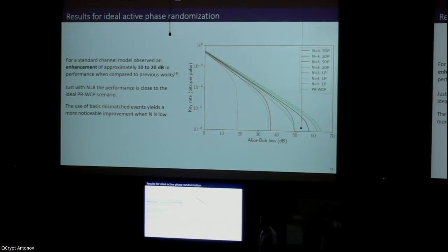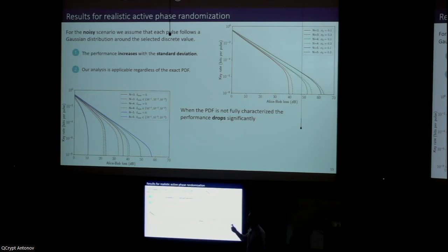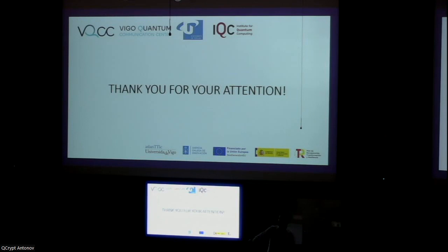Finally, for the realistic case, here we assume a Gaussian distribution for the noisy version, and we see that the performance gets better as the standard deviation increases. This is counterintuitive in some way, but the thing is that a bigger standard deviation approaches the phase randomized weak coherent pulse scenario, so the performance gets better. I'd like to remark one more time that this is just an example and this analysis is applicable regardless of the exact PDF. Finally, the results for the unknown or partially known PDF case: we can see a drop in performance here even with low values of Δ of 10^-3. So basically we conclude by saying that it's very relevant to characterize this PDF in practice if possible. That's it. Thank you for your attention, and questions now are welcome.